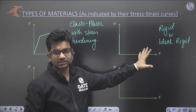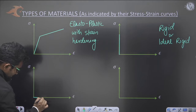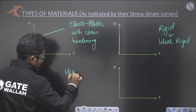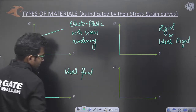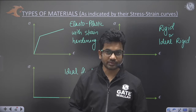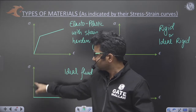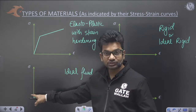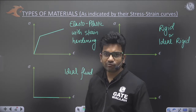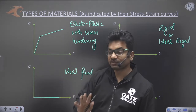Practically, a rigid material does not exist — it is just a theoretical concept. Similarly, another theoretical concept is ideal fluid. If you apply any force on a fluid, it will start deforming and offer no resistance at all. At zero shear stress, it just keeps deforming or flowing. Ideal fluid has zero viscosity and zero surface tension.